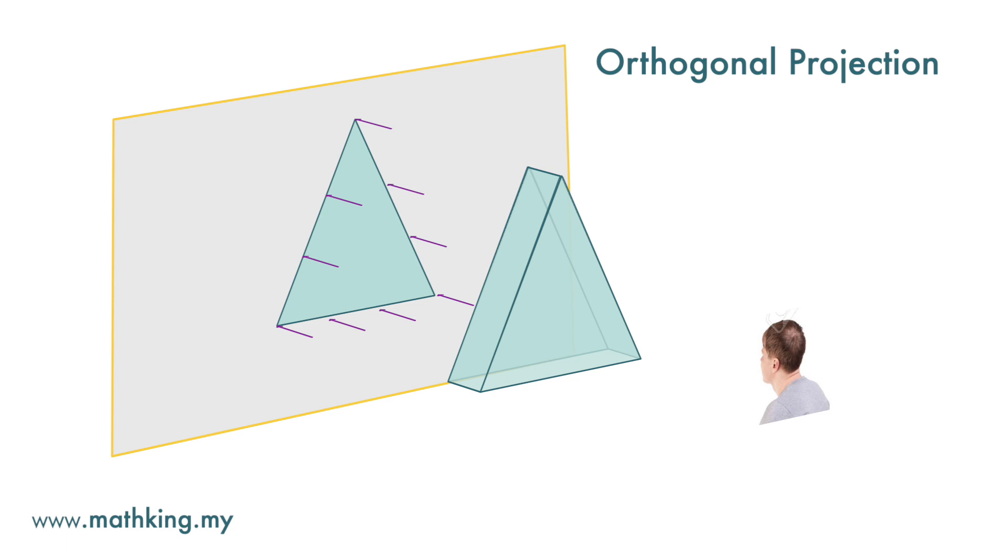You can see that the shape of the image matches the edges of the object. Notice that there are two edges here, but we only see one edge here on the object.